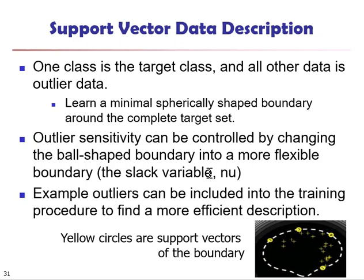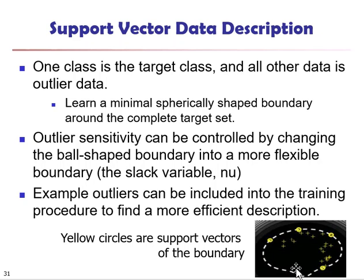Instead, you give the system a slack variable. Remember earlier, when we do normal support vector machines, we allow errors in the decision process — therefore you give a slack variable. In the R exercise, you can see this variable is named nu. With this slack variable, the circle is going to be smaller and will allow some data points to be outside of the boundary. This is a similar idea to when we look at binary support vector machines, where we actually allow some data points to appear in the middle of the margin.